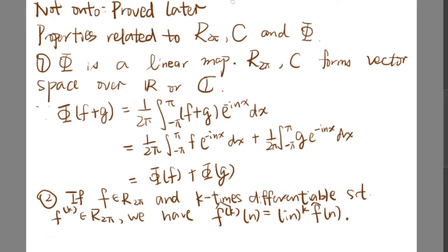Let's discuss the properties related to R2π, C, and φ. First of all, φ is a linear map, and R2π and C form vector spaces over the set of real numbers and the set of complex numbers.